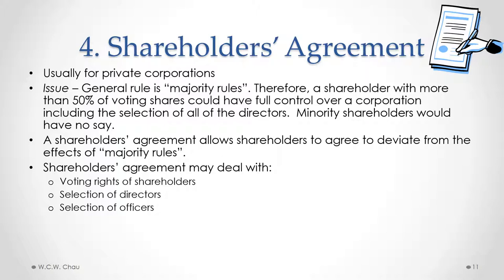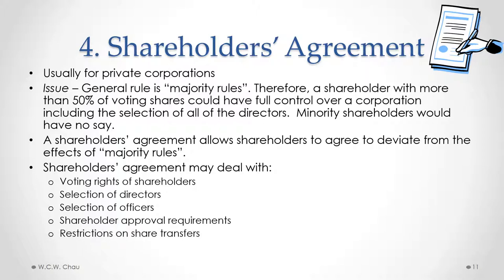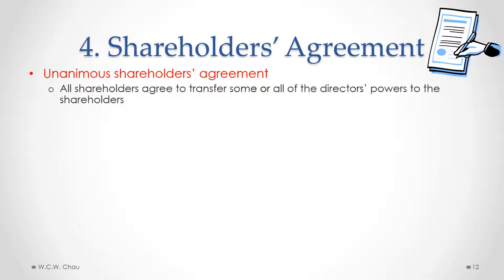The shareholders agreement could also deal with the selection of officers. With a private corporation, we might want one of the shareholders to be the CEO, so we would put that into the shareholders agreement. We would also put in the agreement various requirements for shareholder approval — what types of decisions need to be approved by shareholders and by what percentage. We could also put in restrictions on the transfer of ownership of shares. With a unanimous shareholders agreement, all of the shareholders could agree to transfer some or all of the directors' powers over to the shareholders, relating to high-level supervision and management of the corporation.